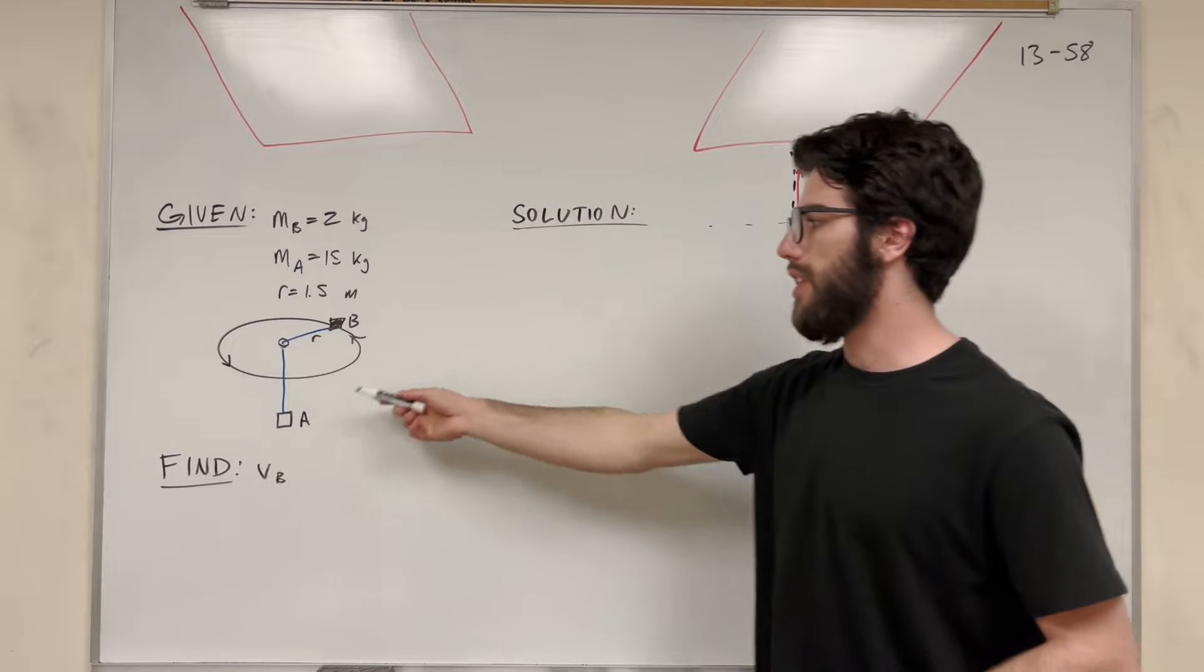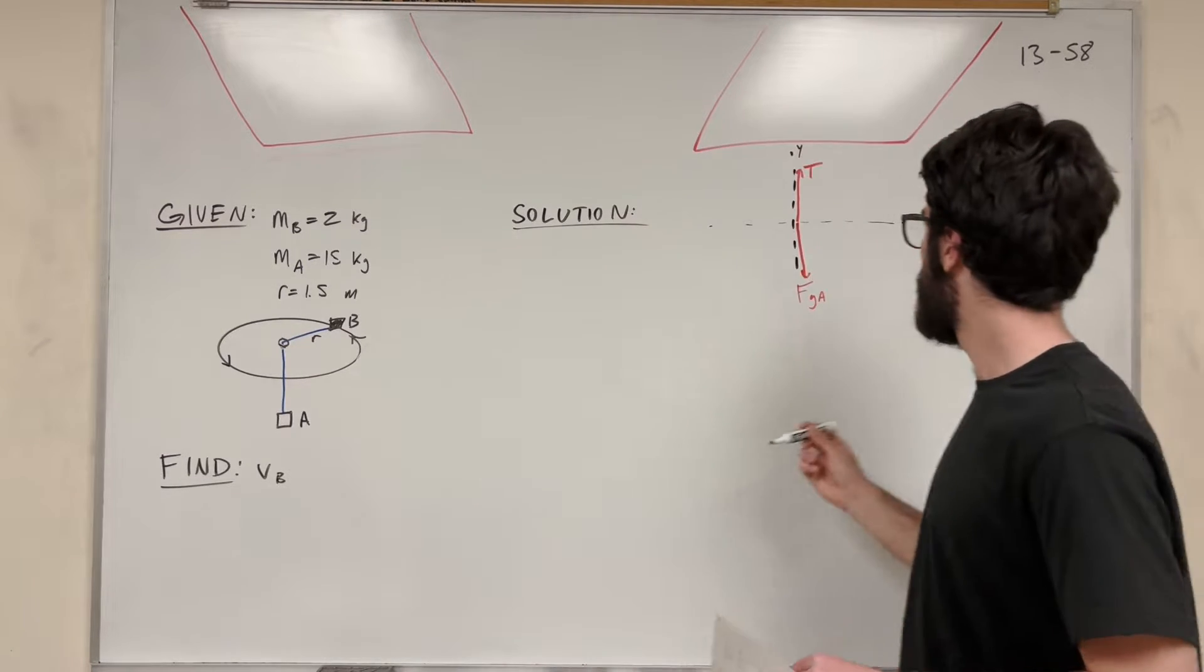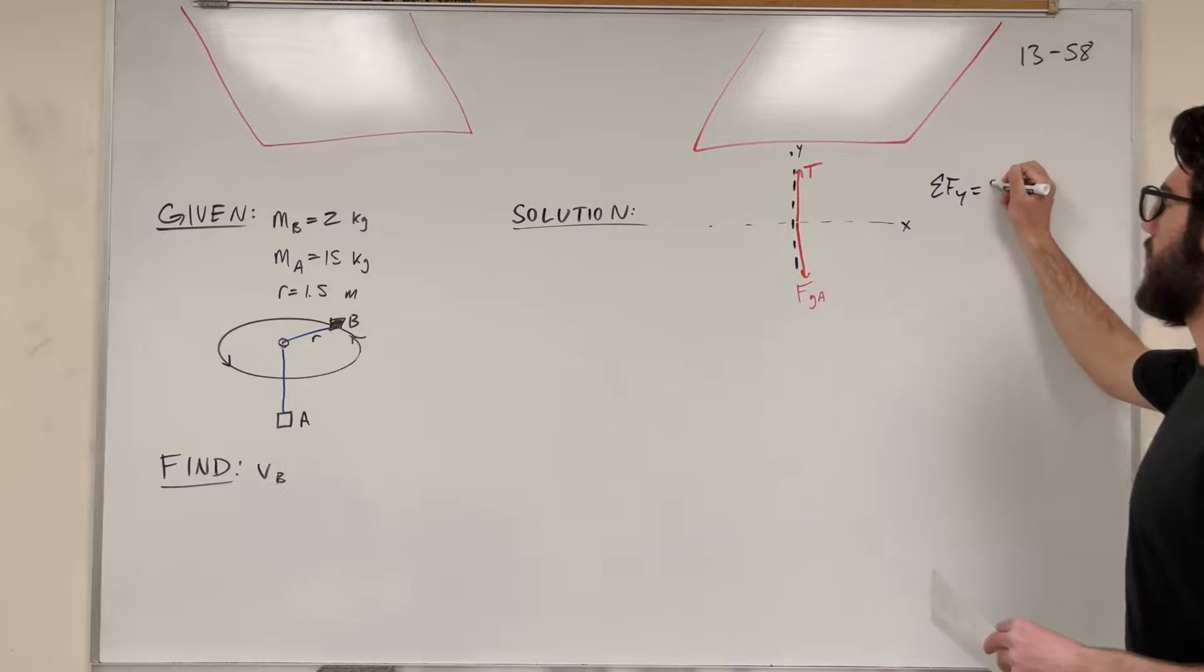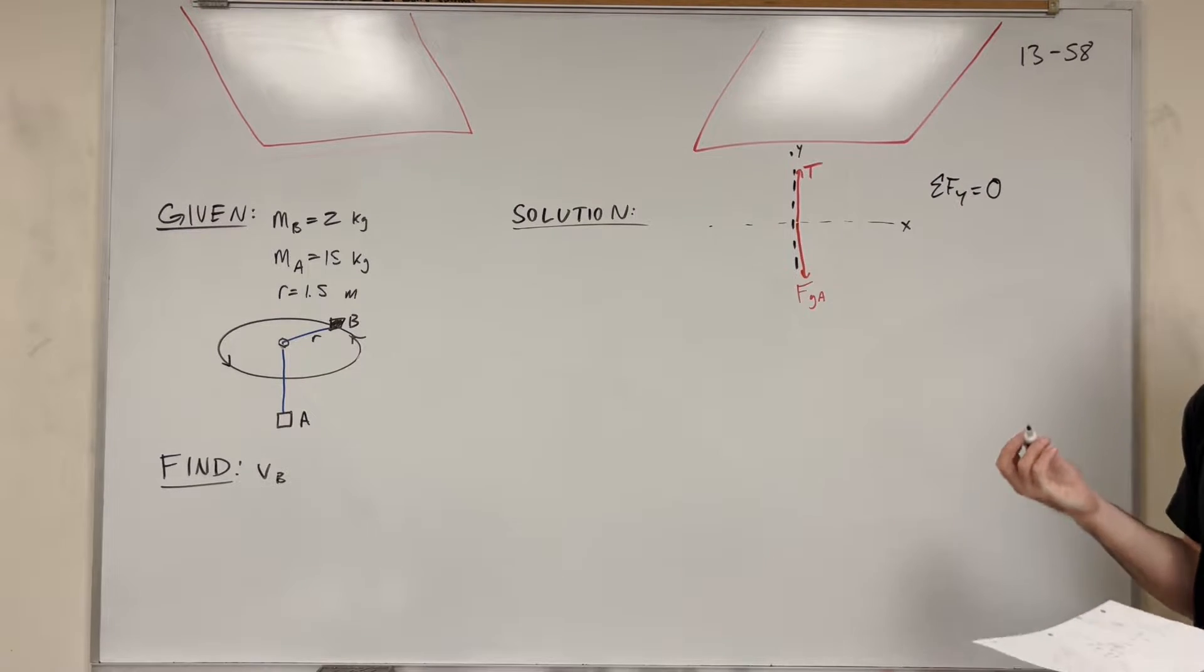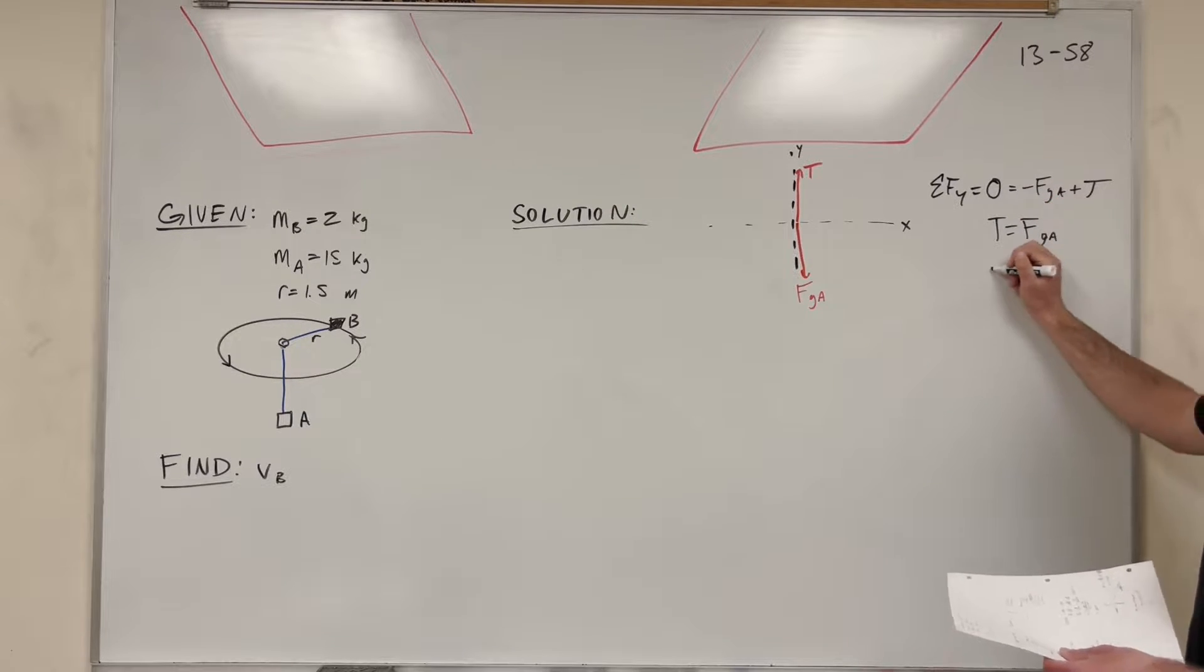So we want A to stay at rest. We don't want it to go up or down, so we want to have no acceleration. When we take the sum of the forces in the Y direction, we need to set that equal to zero because acceleration needs to be equal to zero. So then if we add it up, we get negative force gravity of A plus tension. Then we get that tension is just equal to the weight of A. So we can label that even further: tension is equal to mass of A times gravity.